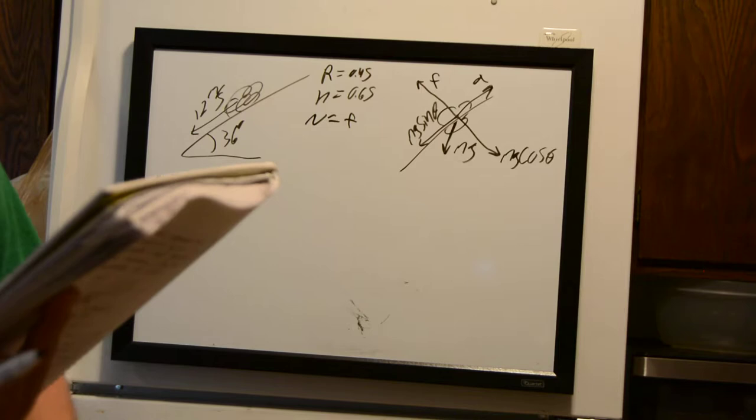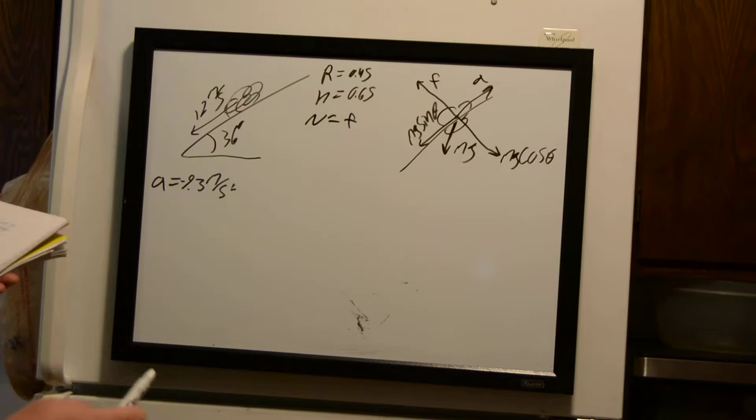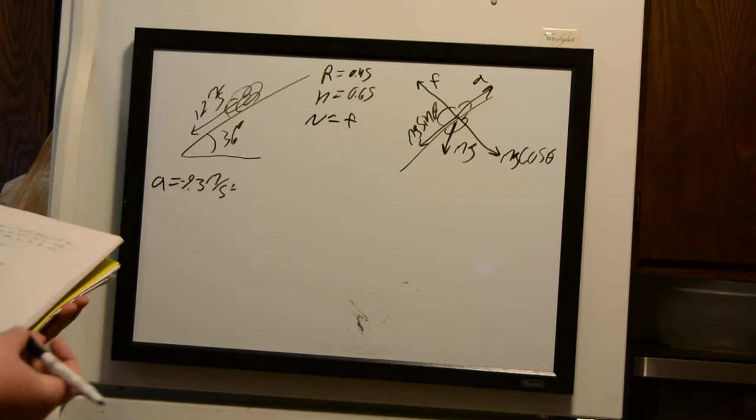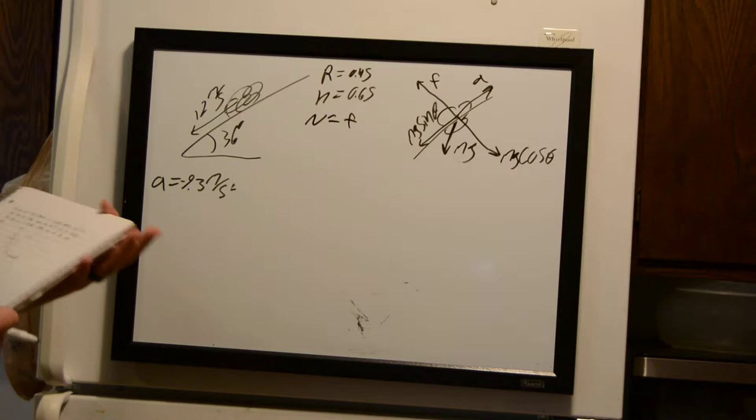If it stays, we say Y. And if it slides down the hill, find the acceleration on the way down. So once again, we just want to remember our free body diagram here, and we're going to adjust it for when it reaches the highest point of the hill.